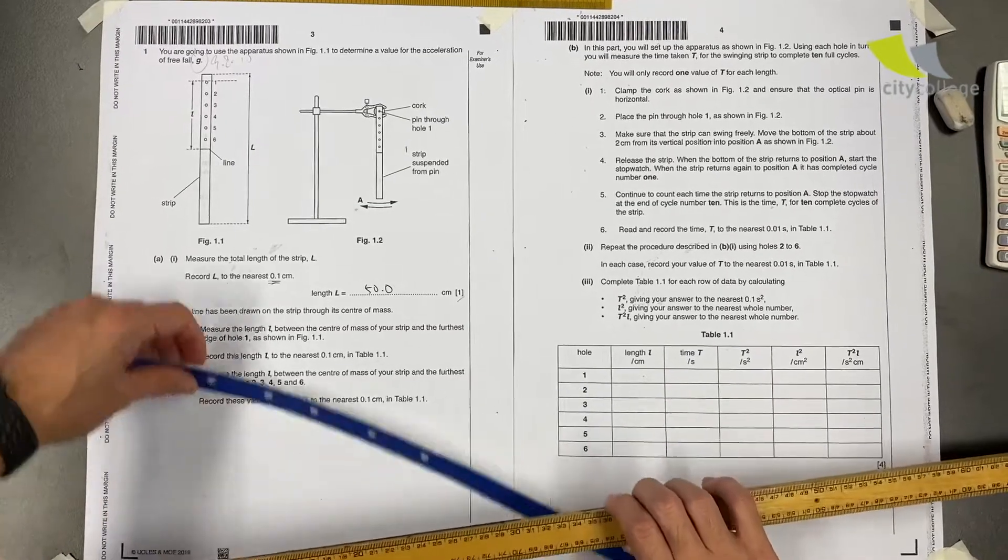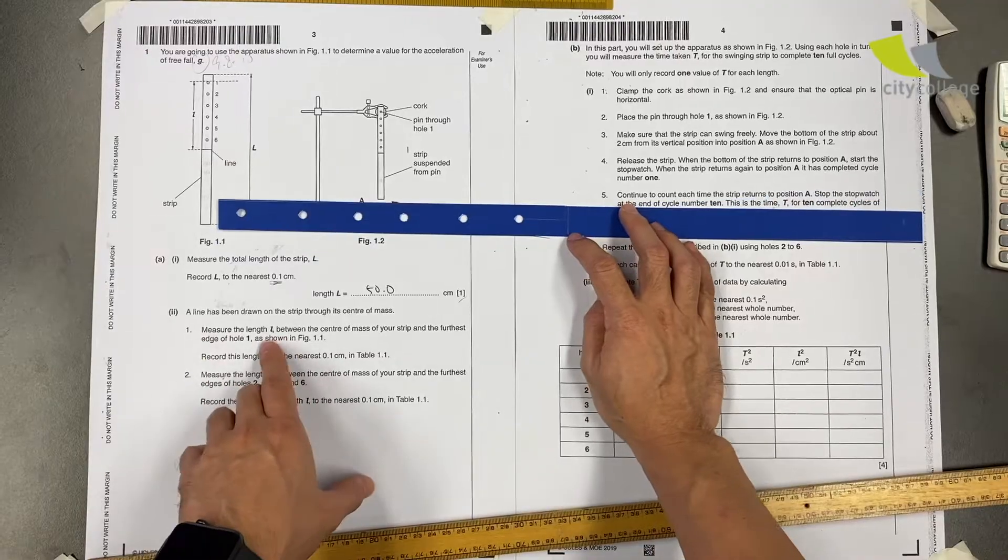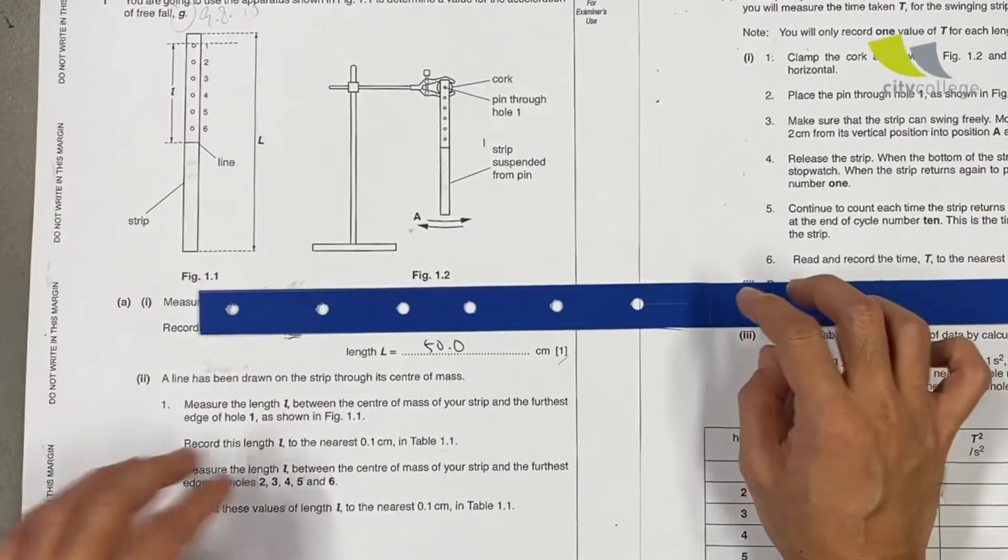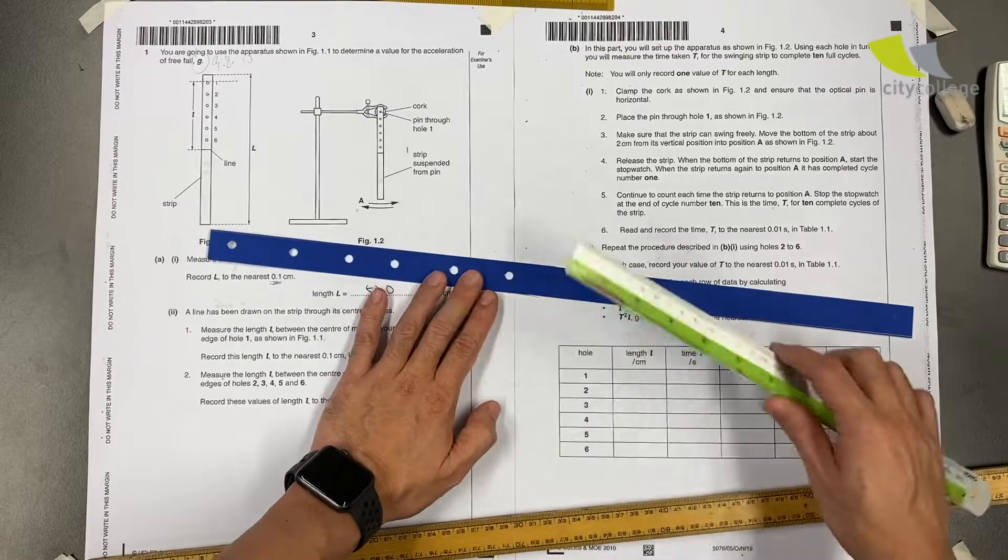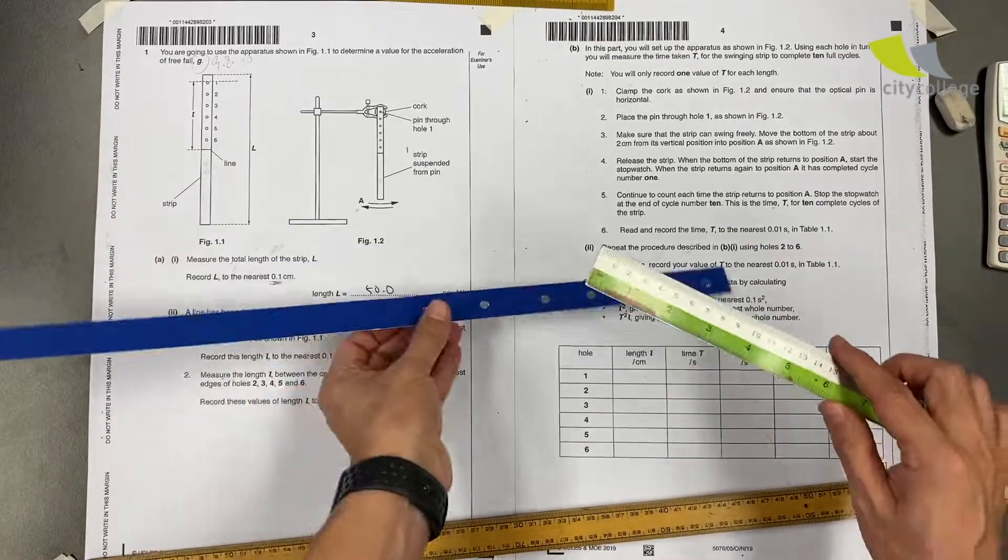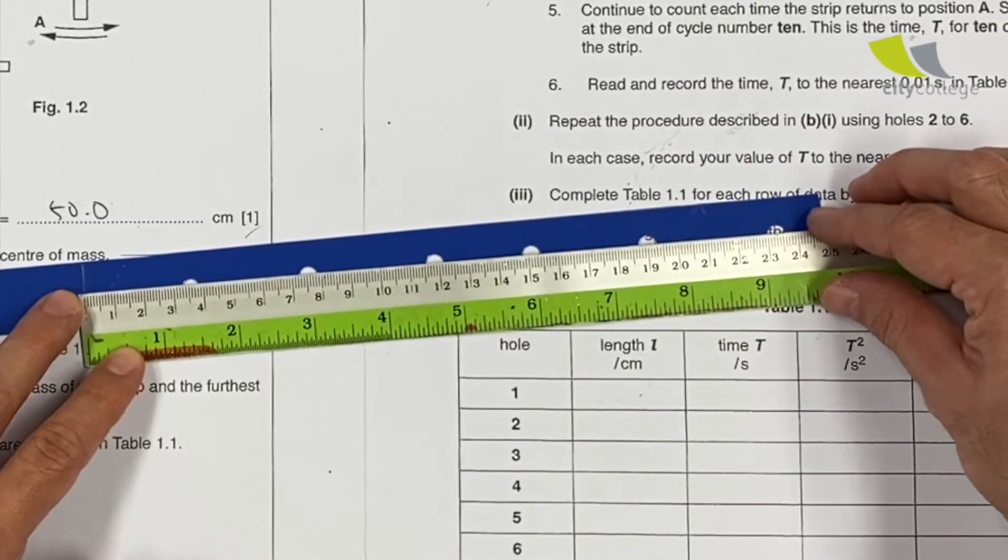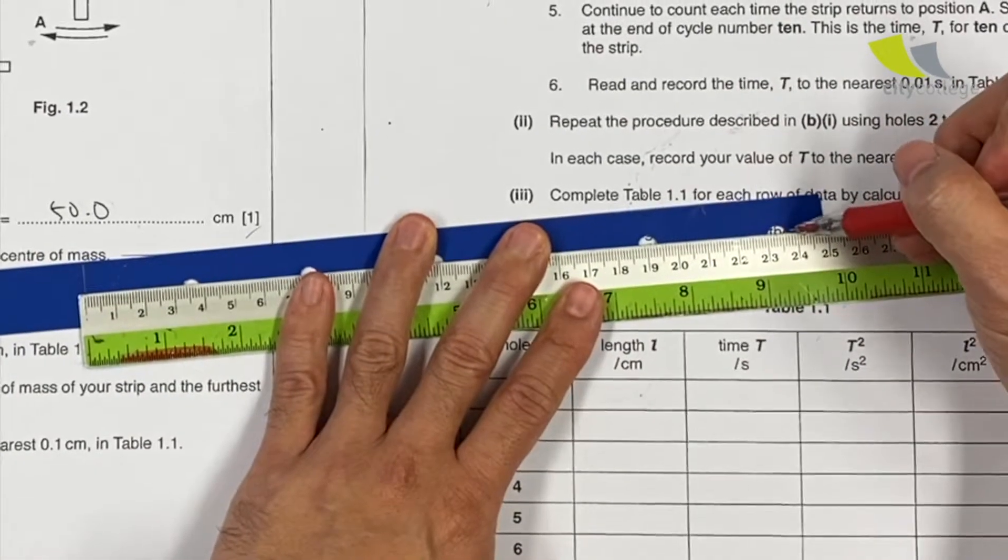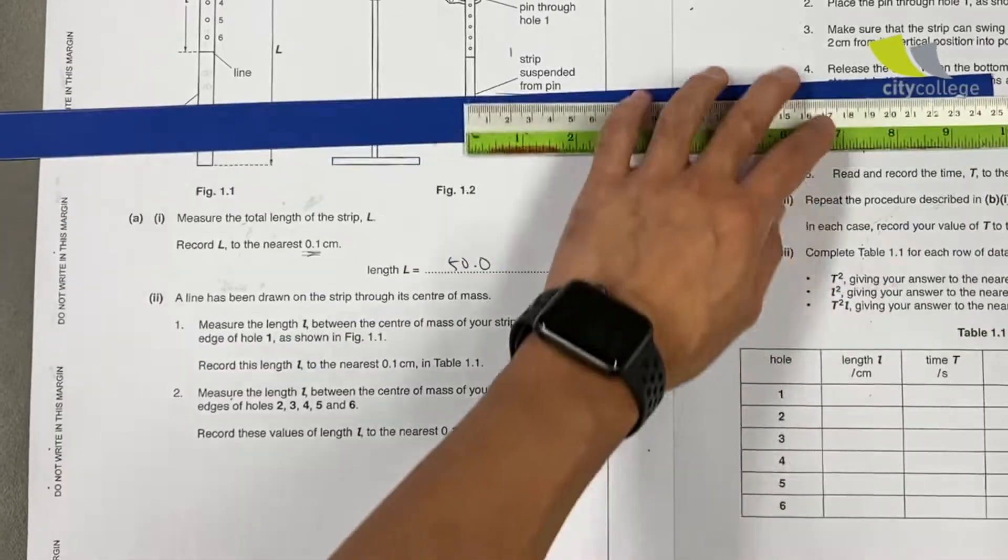A line has been drawn on the strip through the center of mass. I think they're referring to this line. Measure the length L between the center of mass of the strip and the furthest edge of hole 1. Hole 1 will be here, so they want the distance between here to here. Where do I place the ruler? Do I place the 0 marking here? No. You always use a longer line strip, then there will be a better reference. They want it to the furthest edge of the circle. So that means it's this point. So this is 23.6.